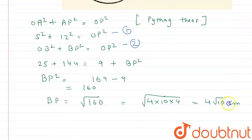So here we get BP equals 4 square root 10 centimeter. So this is our answer, thank you.